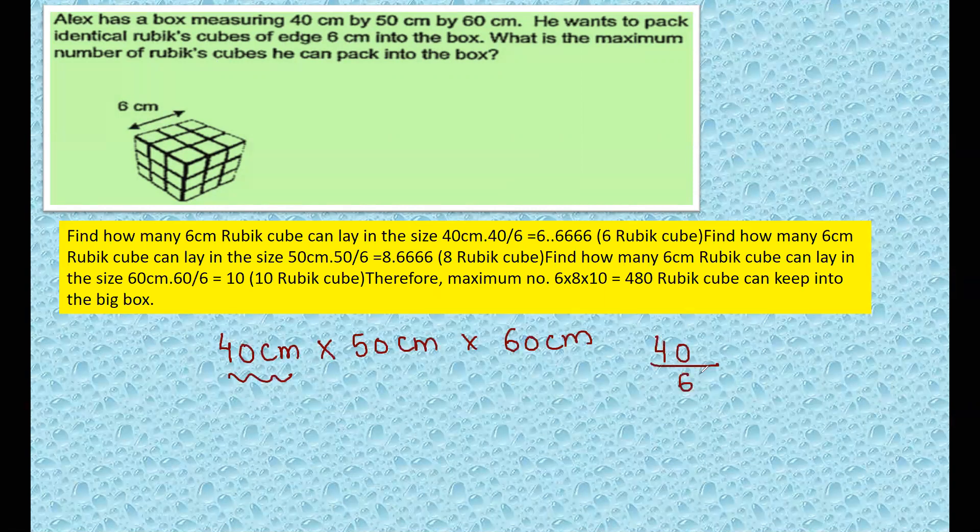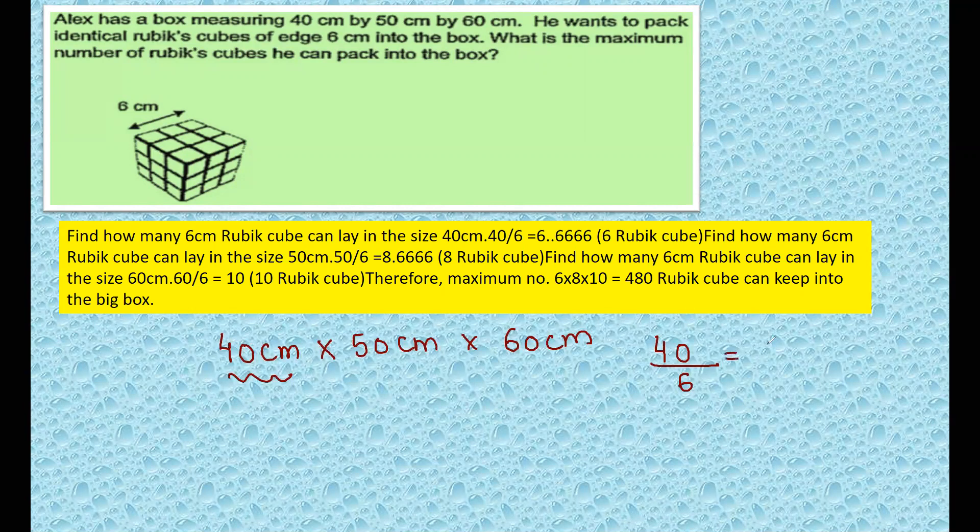40 divided by 6 - 6 sixes are 36, so 6 point something, so we take 6. Similarly, 50 divided by 6 is 8 point something, so we take 8. And similarly, 60 divided by 6 gives you 10. So just 6 times 8 times 10.